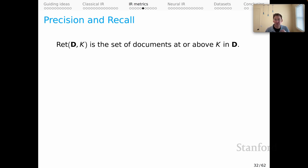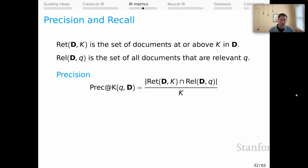Two preliminary concepts. First, the return set for a ranking at value k is the set of documents in the ranking at or above k. The relevant set for a query given a document ranking is simply the set of all documents that are relevant to the query. That is, all the ones in my notation that have stars attached to them anywhere in the ranking. Then we can define precision at a relevant value, a chosen value k, the precision at k. Here, the numerator is the return set intersected with the relevant set, and the denominator is the value k.